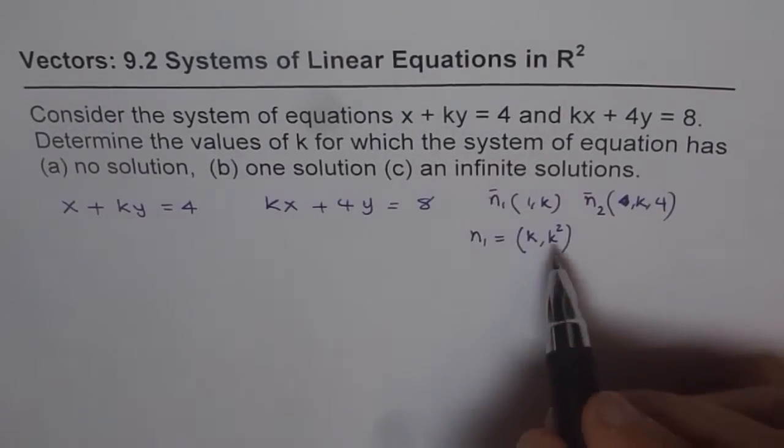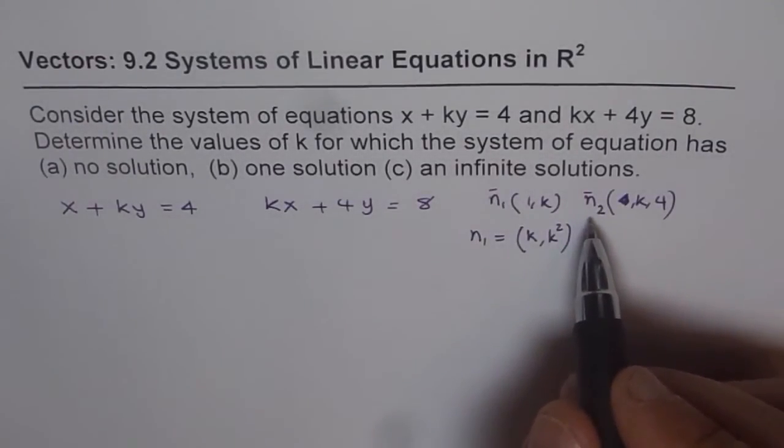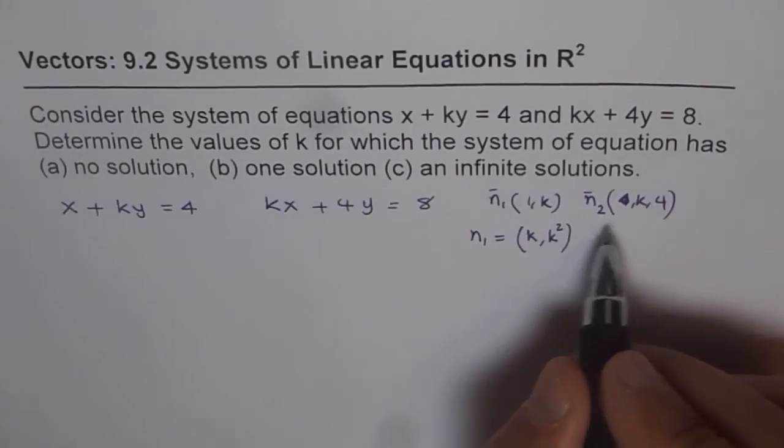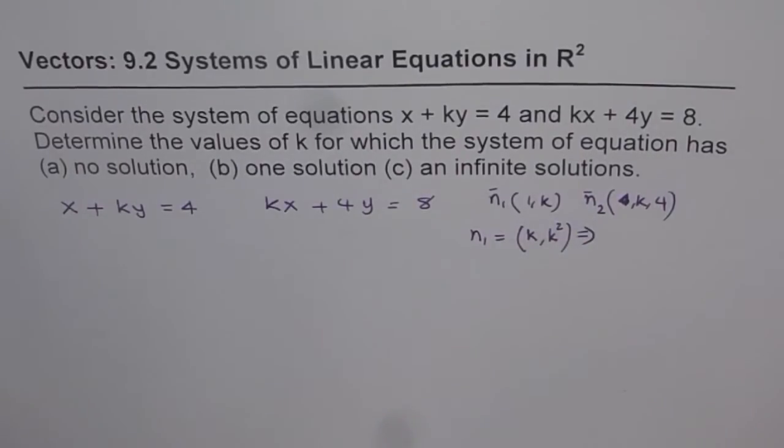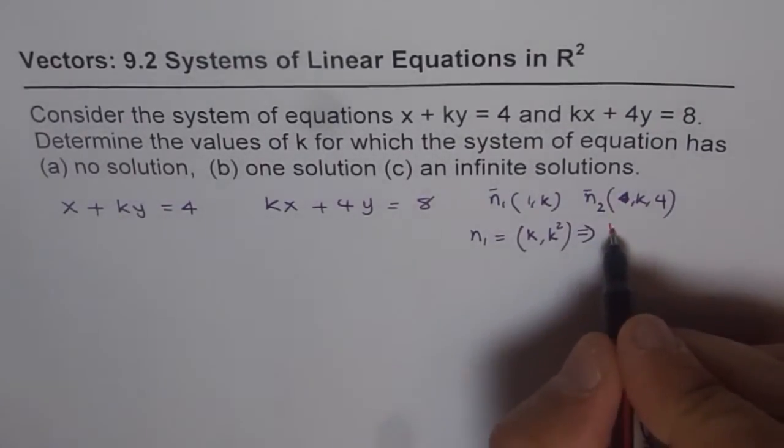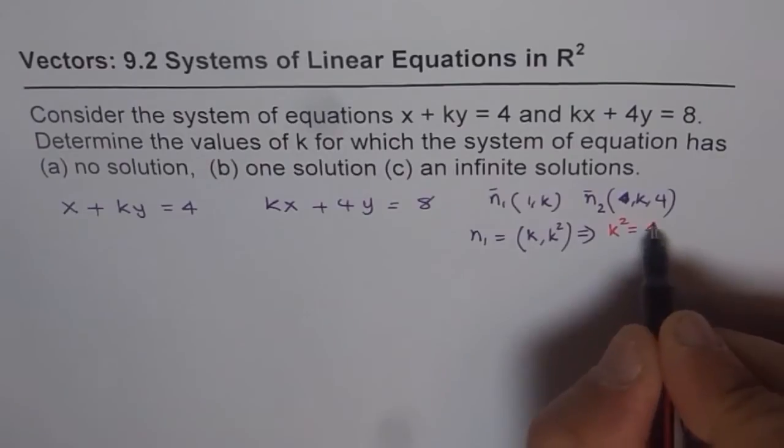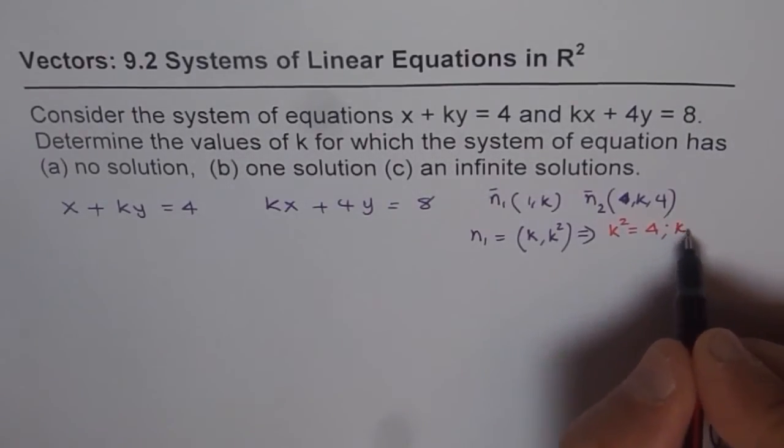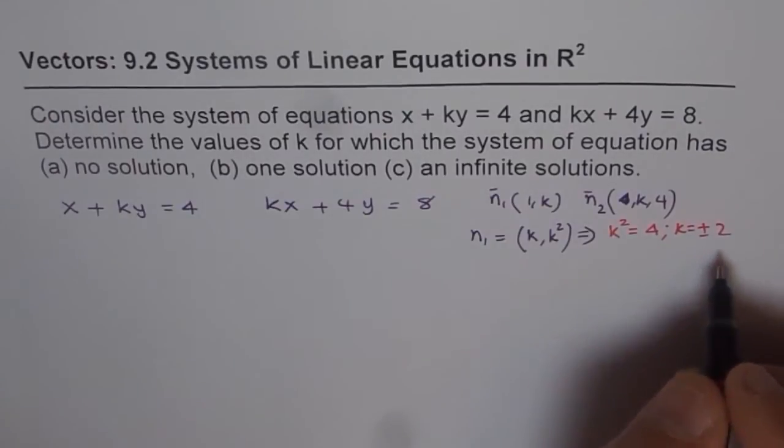That means that k² should equal 4. That implies k² equals 4, and k² equals 4 means k equals plus minus 2. So we get two conditions, that k is plus minus 2.